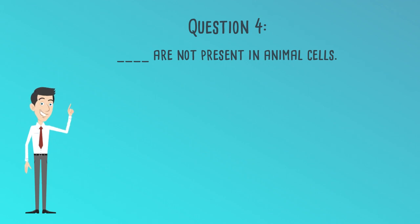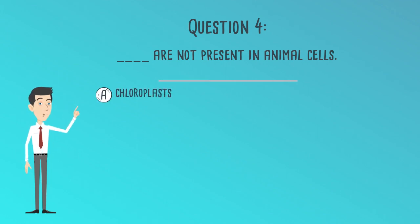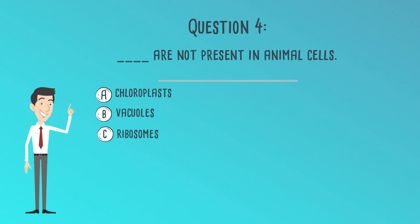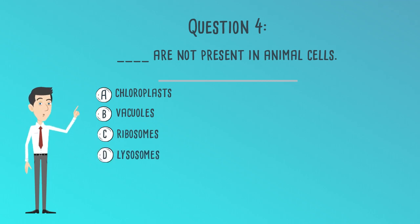Question 4. Blank are not present in animal cells. A. Chloroplasts. B. Vacuoles. C. Ribosomes. D. Lysosomes.